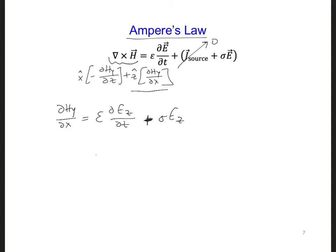And for the x-hat term, we get dhy dz equals epsilon dE x dt plus sigma ez.